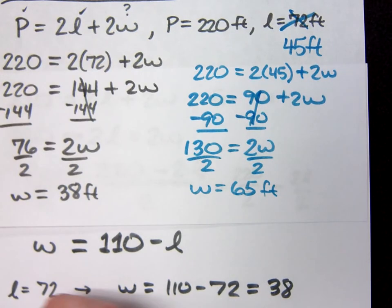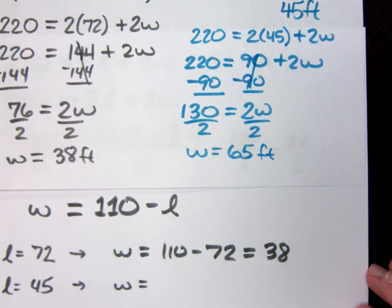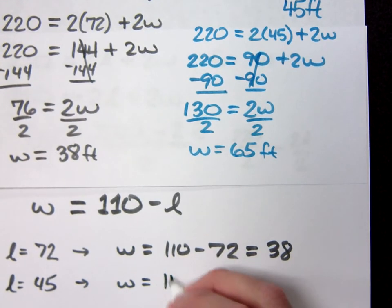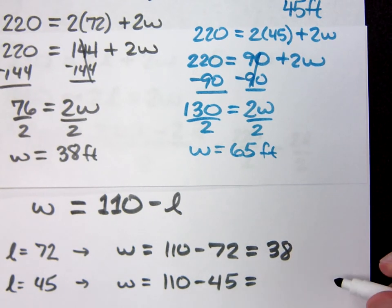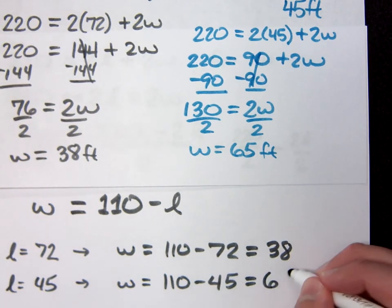And then he changed it to be 45. So when the length was 45, then my width should be 110 minus 45. What's 110 minus 45? 65.